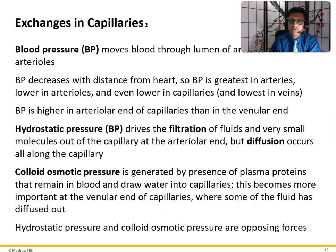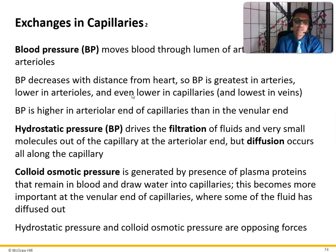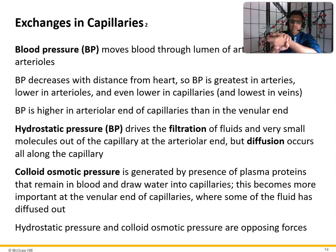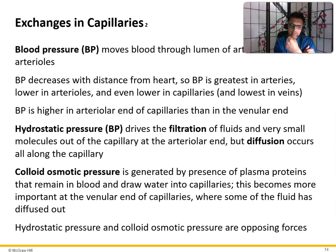Blood pressure moves blood through the lumen of the arteries and arterioles, and decreases with distance from the heart. Blood pressure is greatest in arteries, lower in arterioles, even lower in capillaries, and lowest in veins. Blood pressure is higher at the arterial end of the capillaries than at the venular end. Hydrostatic pressure drives filtration of fluids and very small molecules out of the capillary at the arterial end, but diffusion occurs all along the capillary. Colloid osmotic pressure is generated by plasma proteins that remain in the blood and draw water into the capillary.